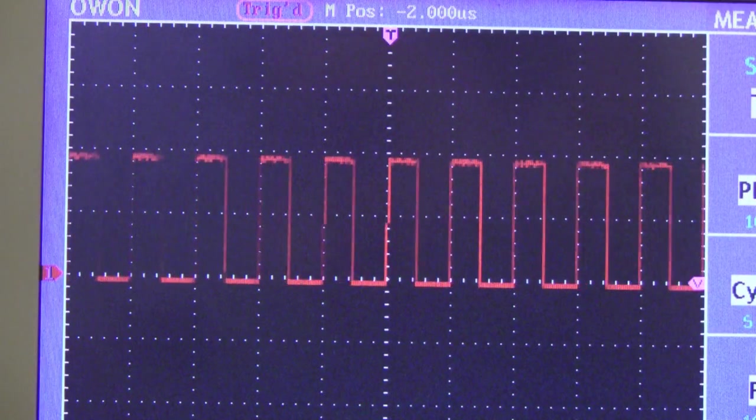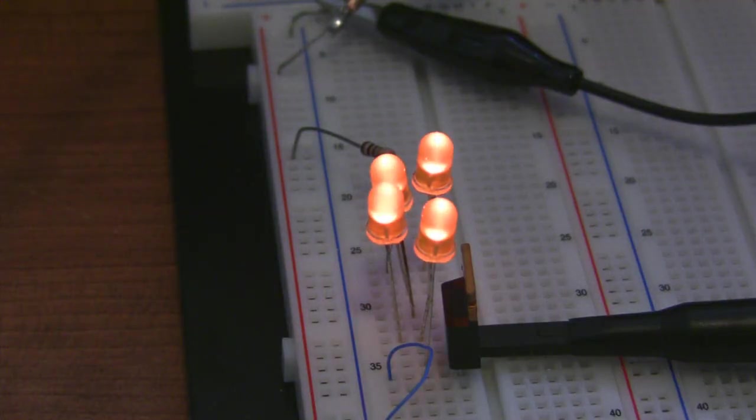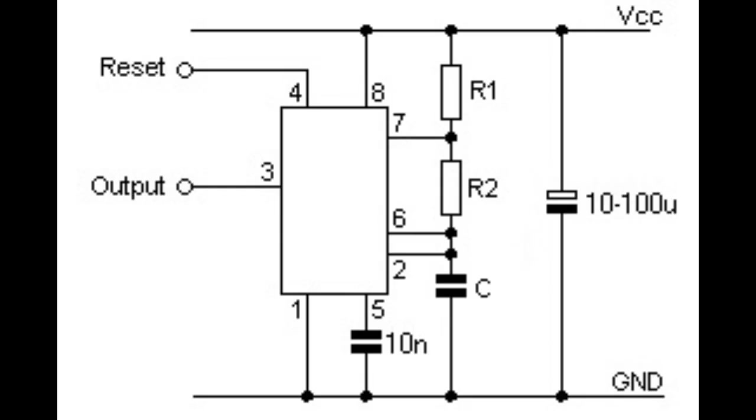By changing the duty cycle of the wave, I can change the brightness of the LEDs, because they're only on for a certain percentage of the time. So now I know that when I'm finalizing my dimmer, I should build an oscillator that puts out a waveform that's at least 1000 Hz.